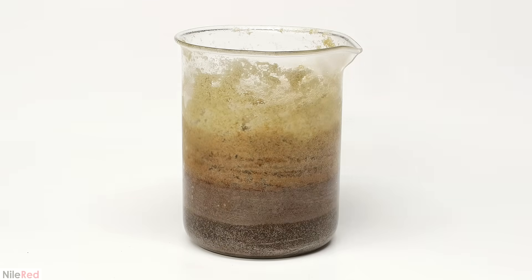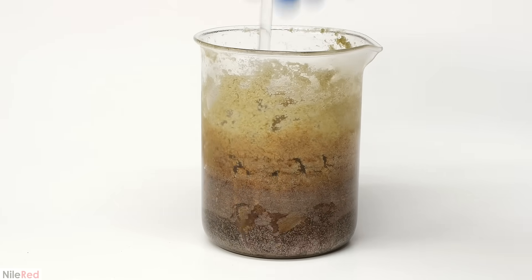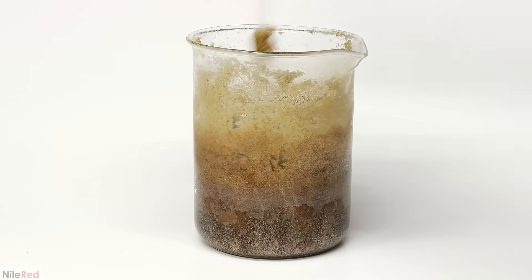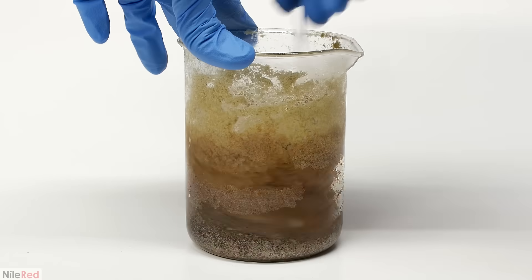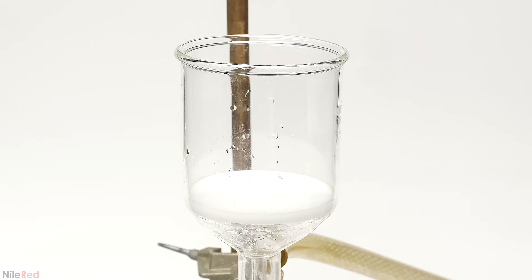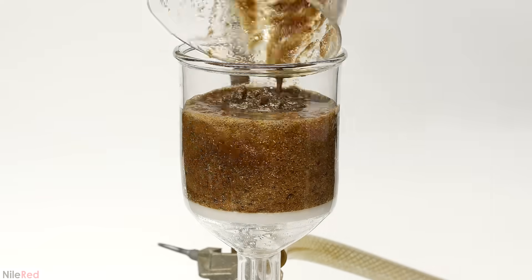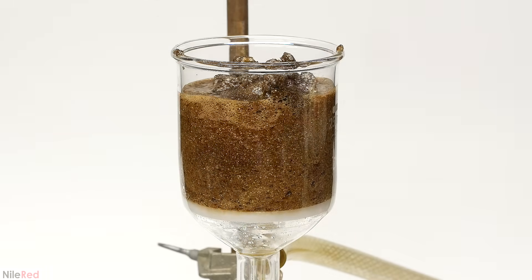A few hours later, I took it out, and the whole mixture had solidified. What I need to do next is filter it, so I quickly break it up using a glass rod. Then, all of the gross brown goo is added to a vacuum filter.